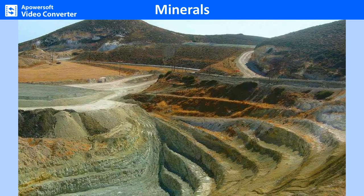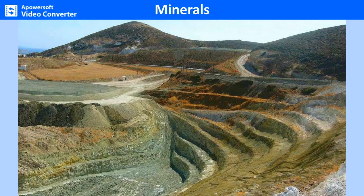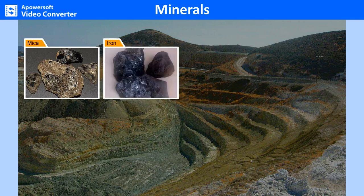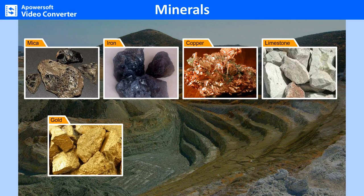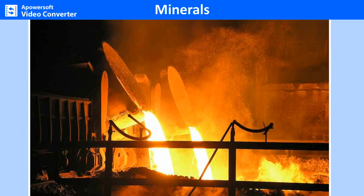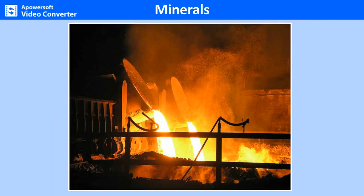There are several thousand types of minerals, with dozens being discovered every year. Examples of common minerals are mica, iron, copper, limestone, gold, silver, feldspar, etc. Minerals are found everywhere but are not evenly distributed. They are formed under different physical and chemical conditions such as varying temperature and pressure. Their formation is closely linked to the rock type and its geologic process.